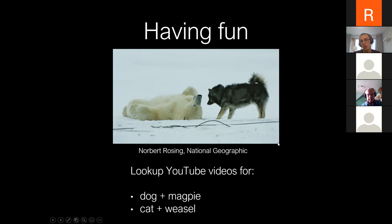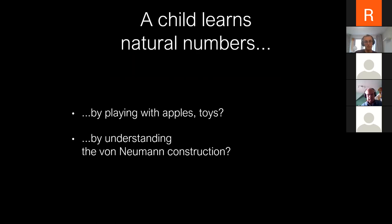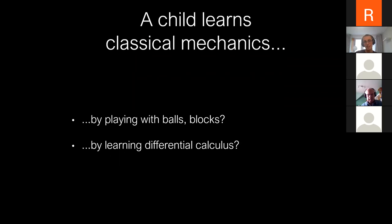What's interesting is that even animals that would normally eat each other are able to have fun together. It's a very different mode of explorative learning versus serious engagement, which might result in death of one of the animals. When children try to learn natural numbers, they start with playing with apples and toys, not with the fundamental construction. The same for classical mechanics — playing with balls comes before Newton's laws and differential calculus.